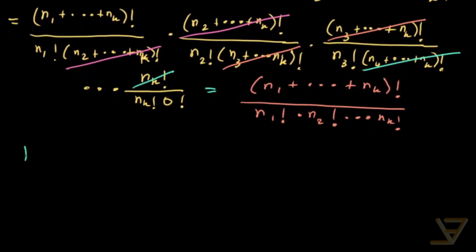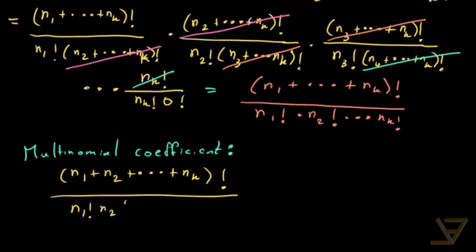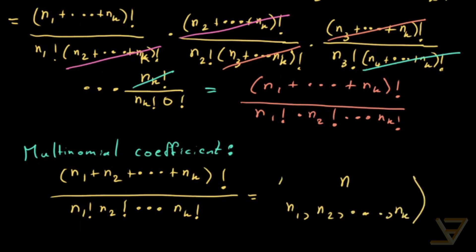This is called a multinomial coefficient, and you'll see why in a future video where I talk about the expansion in the multinomial theorem. We write this expression — (n1 + n2 + ... + nk)! divided by n1! n2! ... nk! — as n choose (n1, n2, ..., nk).